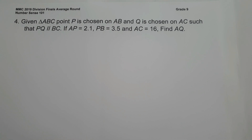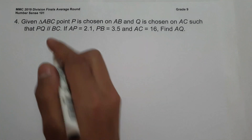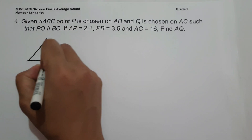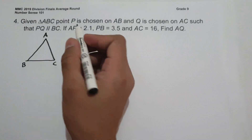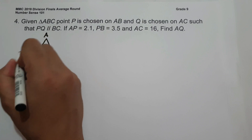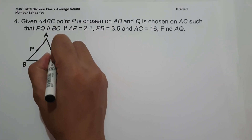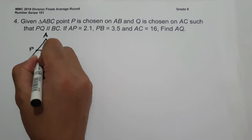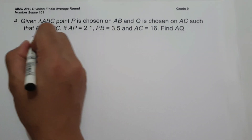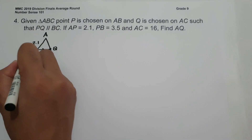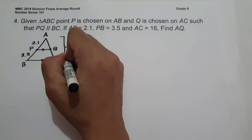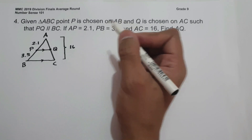On number 4, given triangle ABC, point P is chosen on AB and Q is chosen on AC such that PQ is parallel to BC. If AP equals 2.1, PB equals 3.5, and AC equals 16, find the measure of AQ. Let us illustrate the given with triangle ABC, marking point P on AB and point Q on AC, with PQ parallel to BC.